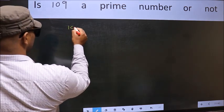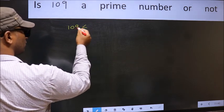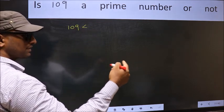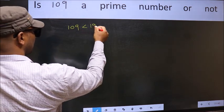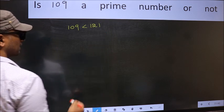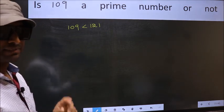Given number is 109. This is close to which perfect square number? This is close to 121, a perfect square number. This is your step 1.